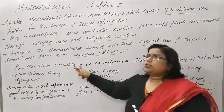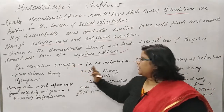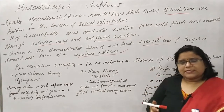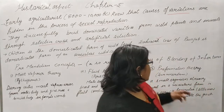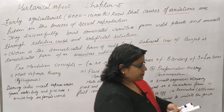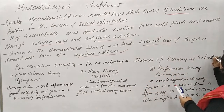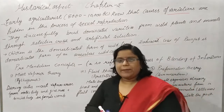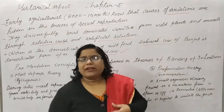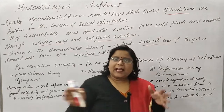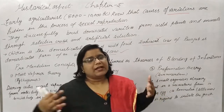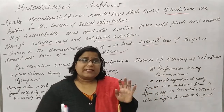Now let us know about pre-Mendelian concepts. The pre-Mendelian concept is called the Theory of Blending of Inheritance. This theory says that there is blending — a mixing — of characteristics. This was considered somewhat correct at the time.